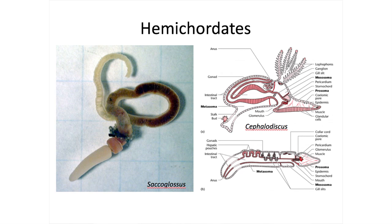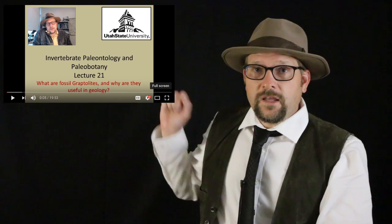Another group of hemichordates includes the genus Cephalodiscus, which filters out plankton using cilia and tentacles, living in colonies on the ocean floor. Hemichordates are thought to be closely related to a group of extinct animals called graptolites, which we discuss in invertebrate paleontology. Click here if you would like to learn more about graptolites.